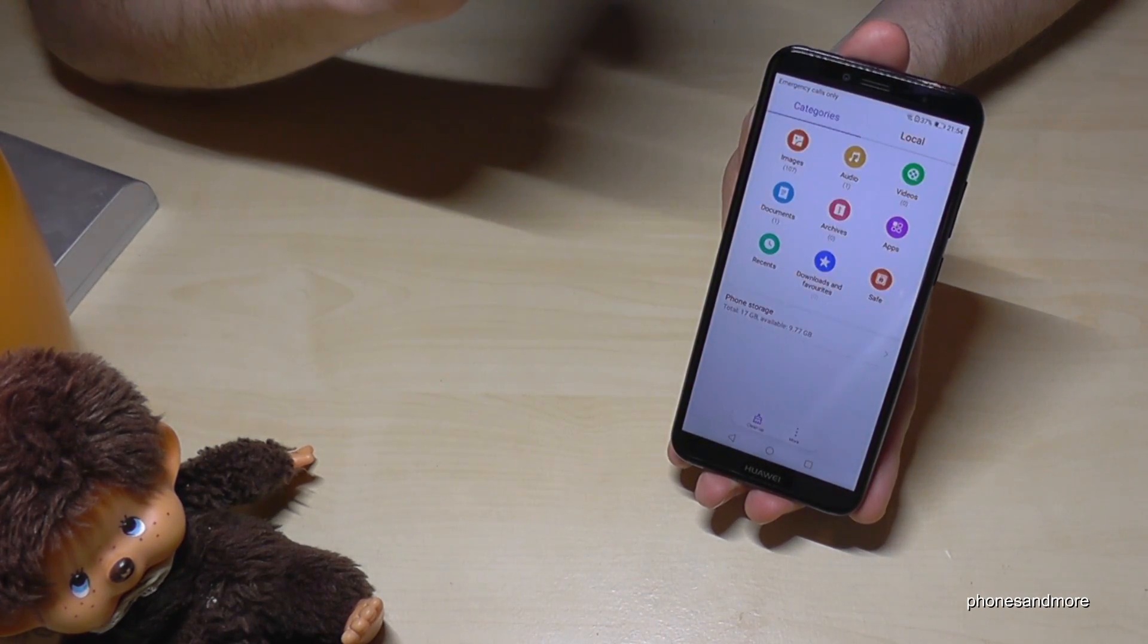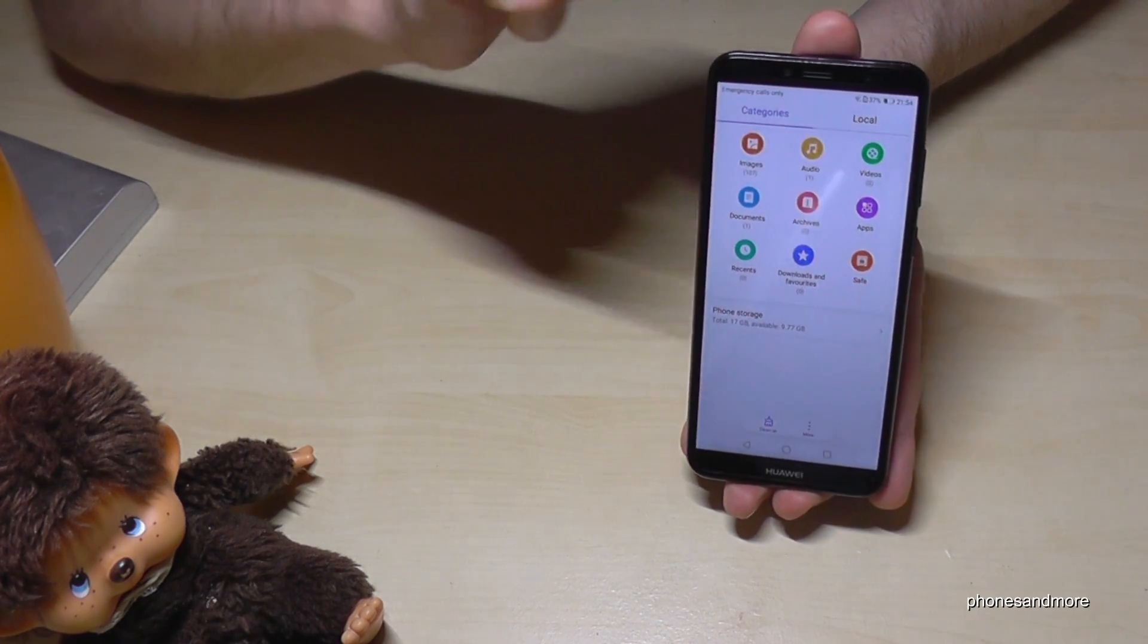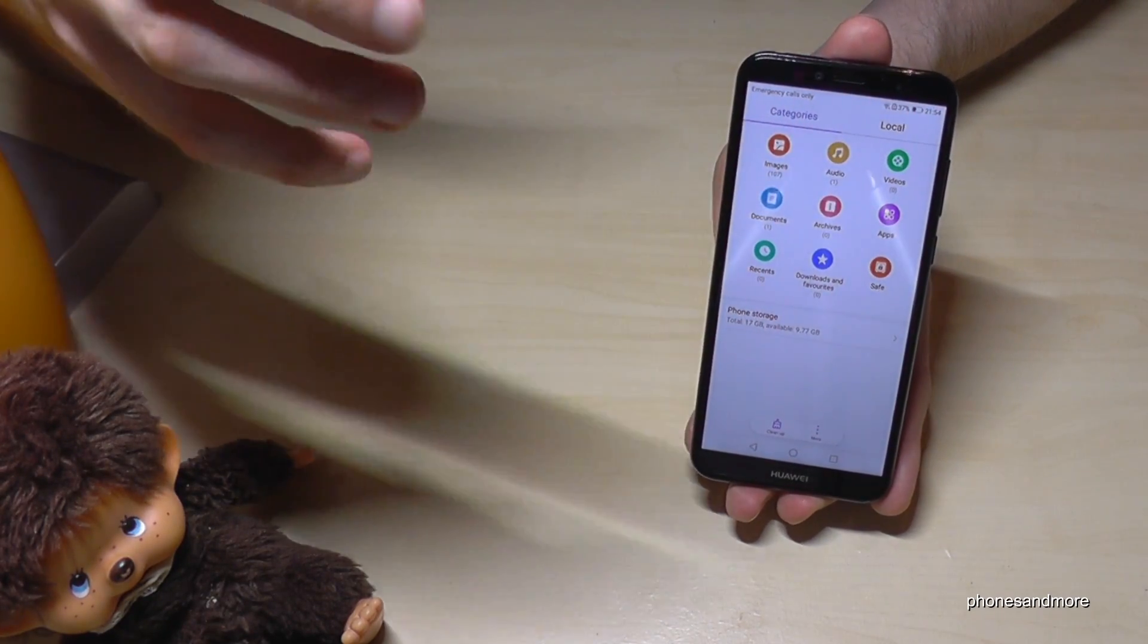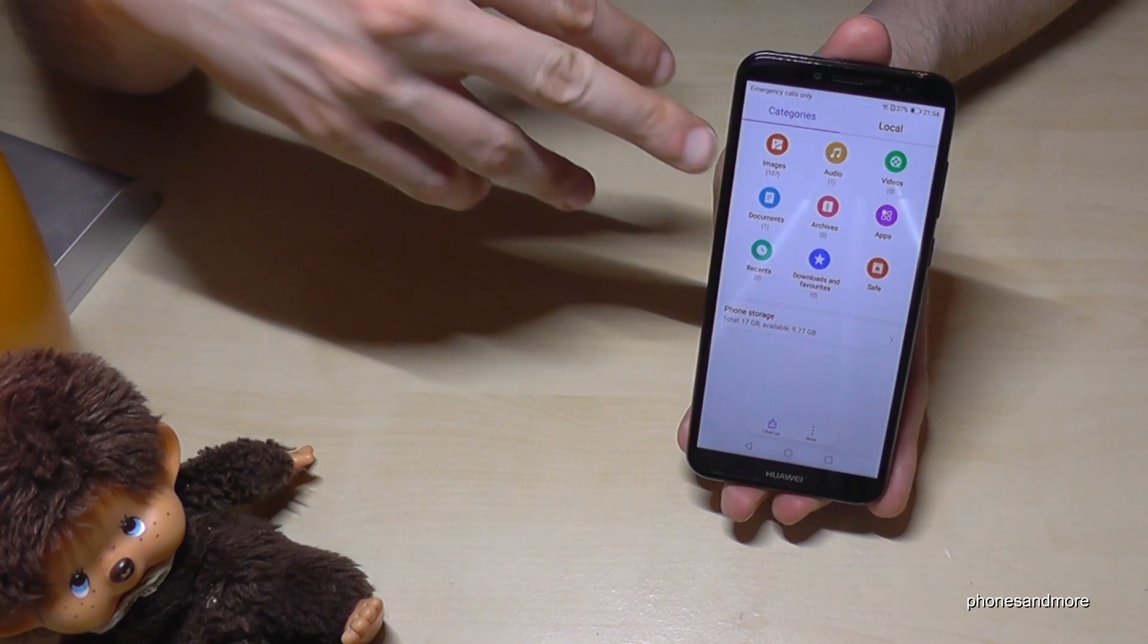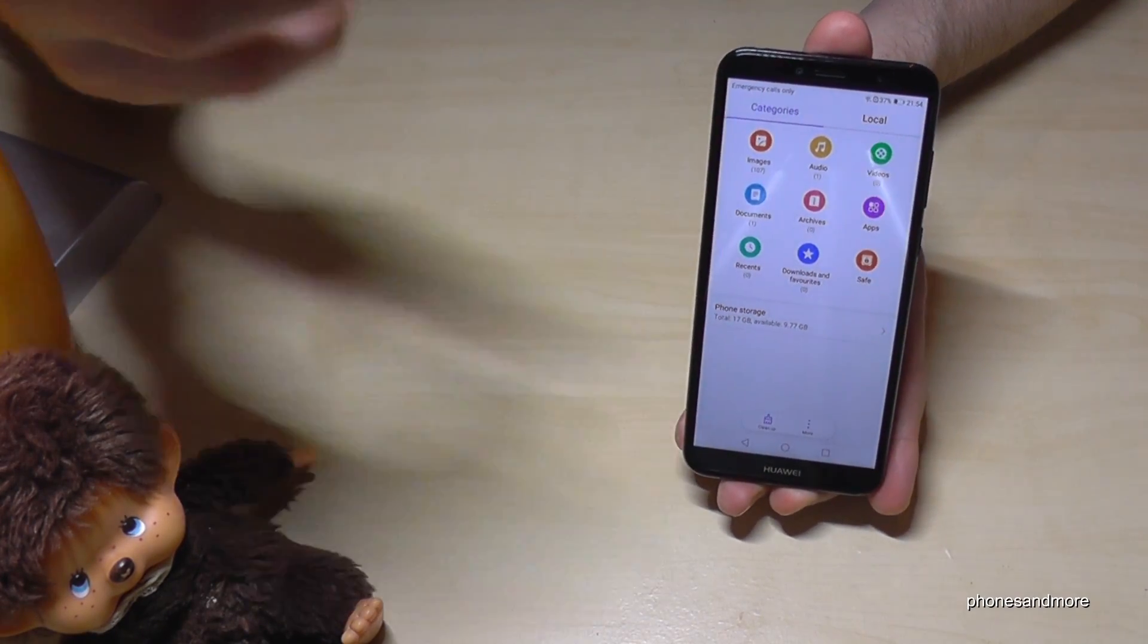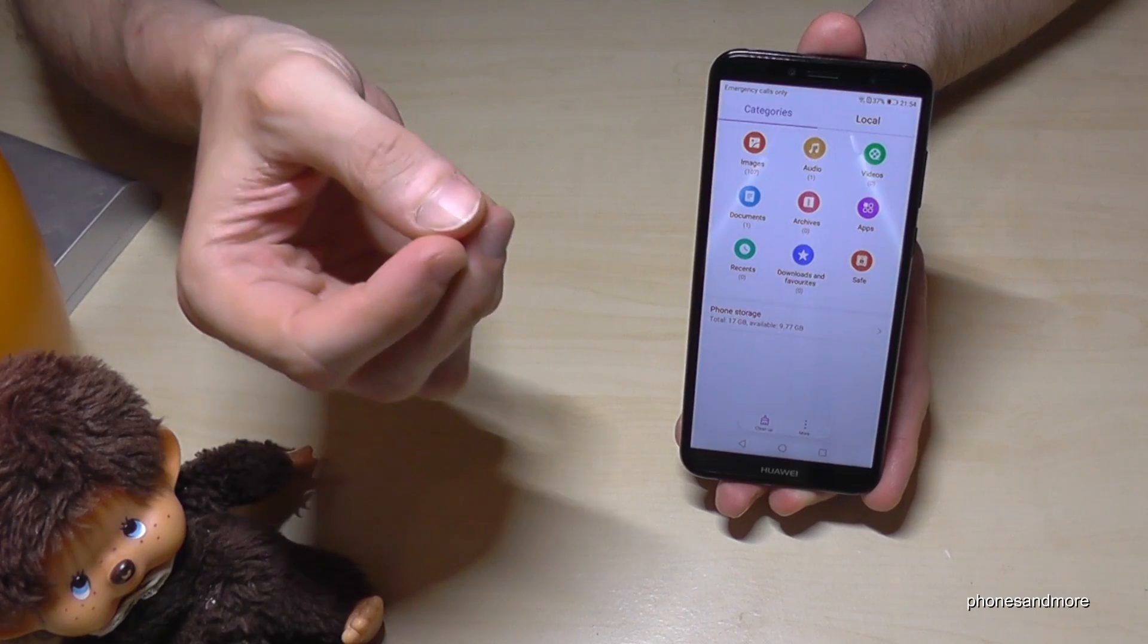Go on that orange symbol for Files and now, first of all, you have a nice overview about the categories, about the images, the audio files, the video files and so on. It combines the internal storage, by the way, and the microSD card.